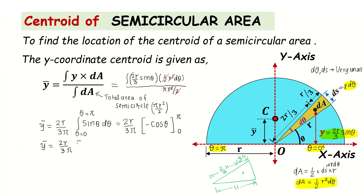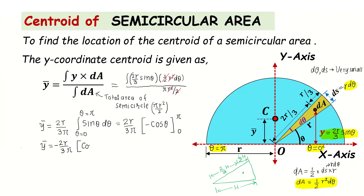Substituting the limits: taking the minus sign outside for easy calculation, we get −(cosπ − cos0). The upper limit gives cos(π) and the lower limit gives cos(0), so we evaluate −(cos π − cos 0).